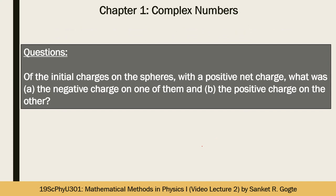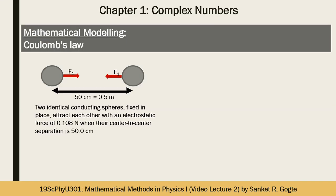The question is: what were the initial charges before the spheres were connected by the thin wire? To solve any physics problem, the first thing you have to do is write it in terms of mathematical equations so those equations can be manipulated to find the answer — this is called mathematical modeling. Suppose the first sphere has charge q1 and the second sphere has charge q2. What are the conditions on q1 and q2?